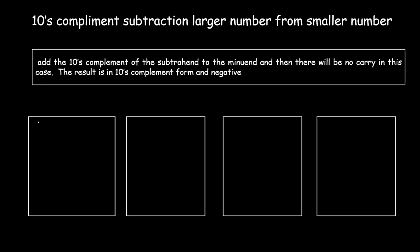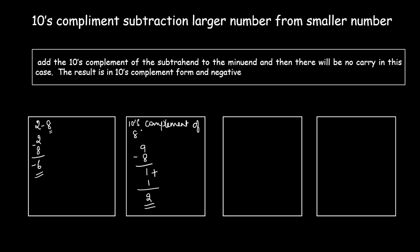Let's try 2 minus 8, subtracting a larger number from a smaller number. In regular subtraction, 2 minus 8 equals minus 6. To apply the tens complement method, find the tens complement of the subtrahend 8. The nines complement of 8 is 9 minus 8 equals 1; adding 1 gives a tens complement of 8 equal to 2.